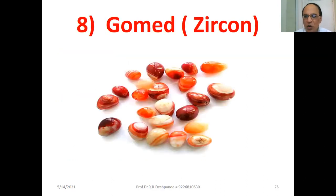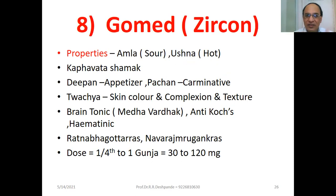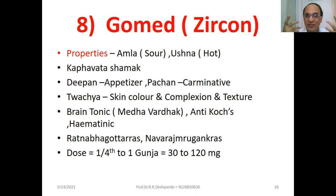Gomed (Zircon). Properties: Amla and Ushna — this is a hot Ratna, unlike the many cooling Ratnas discussed earlier. Kapha-Vata-Shamaka, because both Kapha and Vata are Sheetha. Appetizer, Pachana (carminative). Skin color and complexion improved because Kleda-Nashana removes unwanted waste products from the skin. Brain tonic, removes Tamoguna, Medha-Vardhaka. Anti-cough — kills bacteria. Hematinic, improving blood processing. Products: Ratna-Bhagotra-Rasa and Navaratna-Raja-Murugankara. Dose: one-fourth to one Gunja, 30 to 120 milligram.